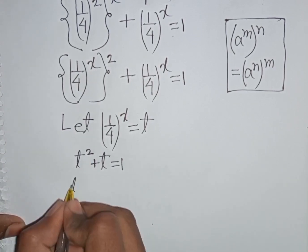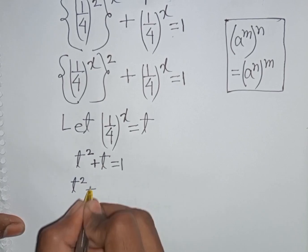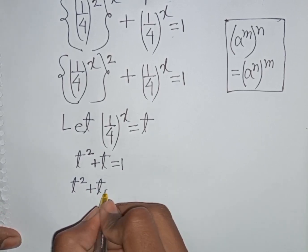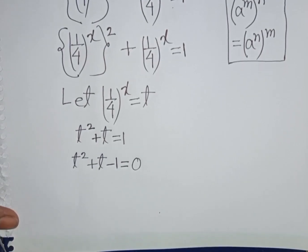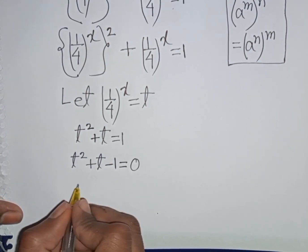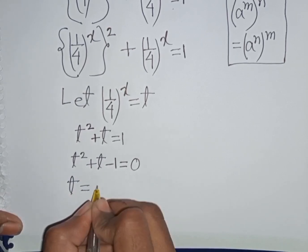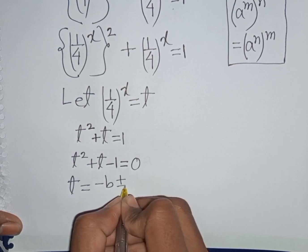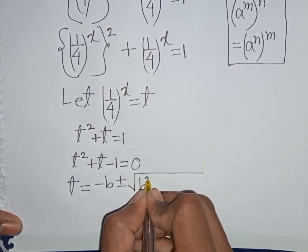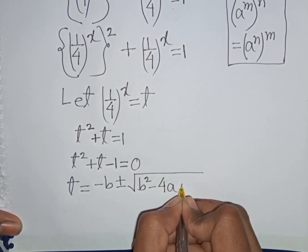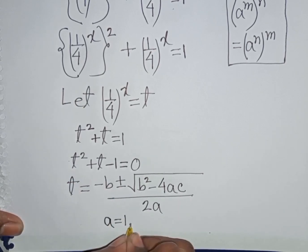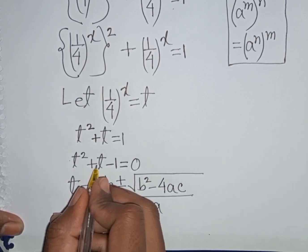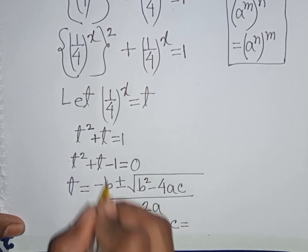We rewrite as t squared plus t minus 1 equals 0, moving the 1 to the left side. Now we can apply the quadratic formula. Here a equals 1, b equals 1, and c equals negative 1.